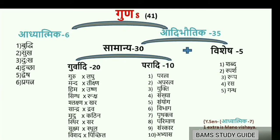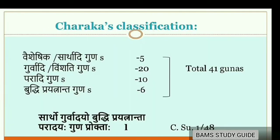According to Charaka Sutra Sthana 1st Chapter 48th Shloka, Acharya Charaka told Vaishishika or Sārthadi Gunas as 5, Gurvādi or Vimshati Gunas as 20, Parādhi Gunas as 10 and Buddhi Prayatnanta Gunas as 6, thus making a total of 41.